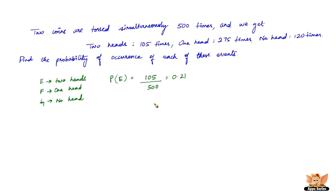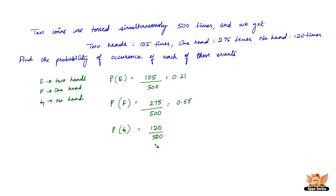The probability of event F is the number of 1-head outcomes, which is 275, divided by the total number of trials, which is 500. That gives us 0.55. The probability of event G — no head — is 120 divided by 500, because the total number of no-head outcomes is 120. So we get 0.24. The probability of event G is 0.24.